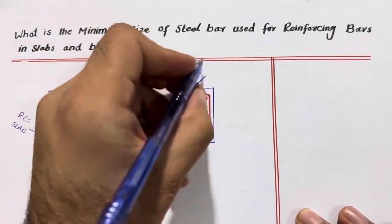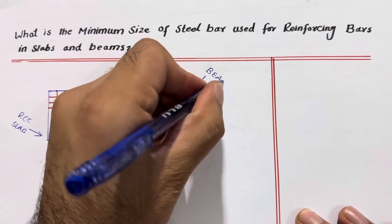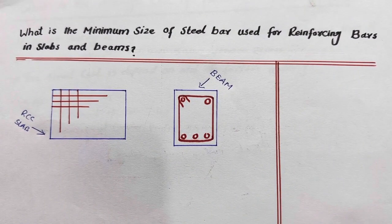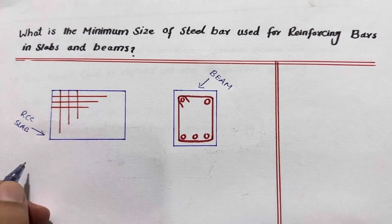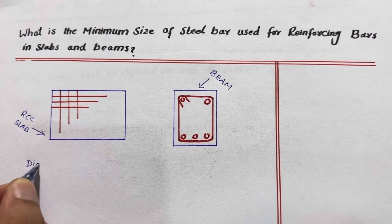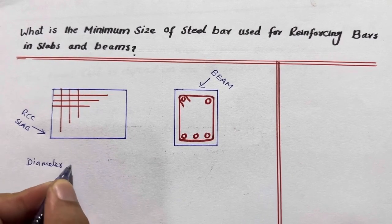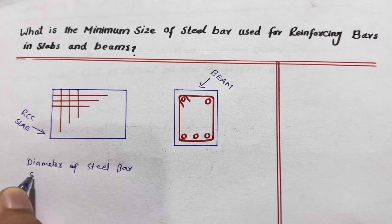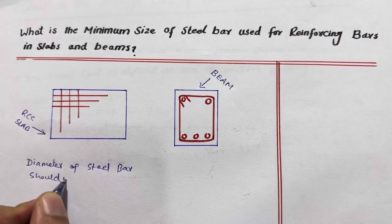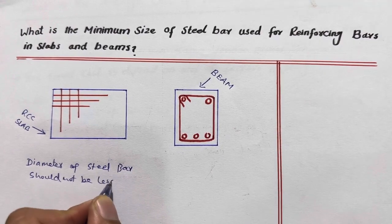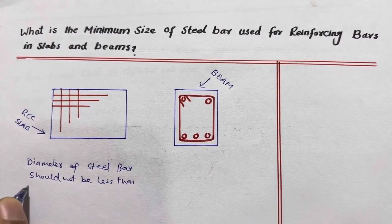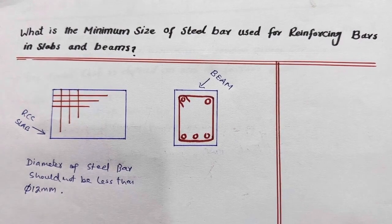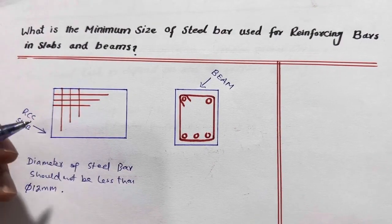As you can see, this is an RCC slab and this one is a beam. Remember, for a normal residential building, if that is an RCC slab or beam, the diameter of the bar should not be less than 12 millimeter. You can see this is the RCC slab — we have main bars and distribution bars.